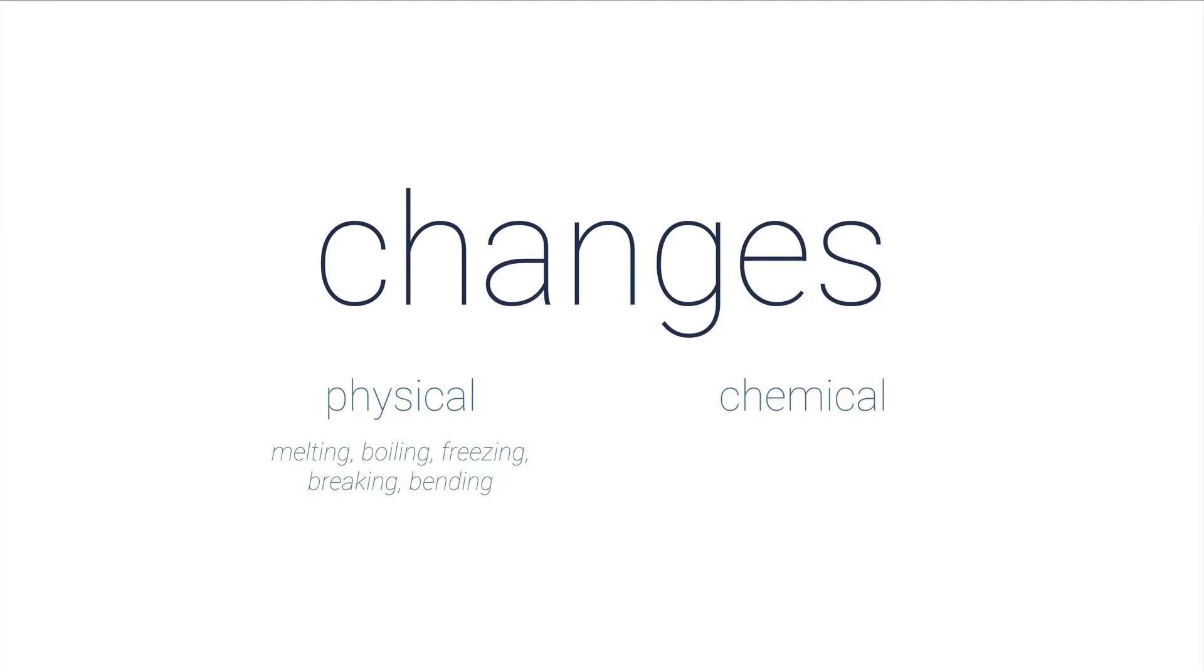In other words, the chemical makeup of that substance is the same before and after the physical change. But with a chemical change, we are making a new substance. We're breaking bonds between atoms and making new bonds. That's the main difference: a chemical change is much deeper into the identity of the substance than a physical change is.